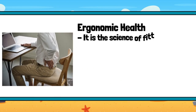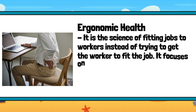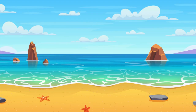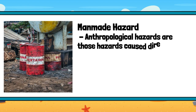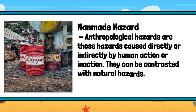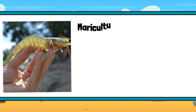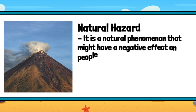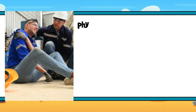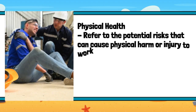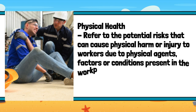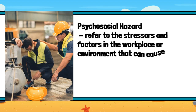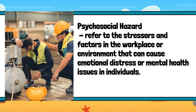Ergonomic health: it is the science of fitting jobs to workers instead of trying to get the worker to fit the job. It focuses on designing workstations, tools and work tasks for safety, efficiency, and comfort. Man-made hazard: anthropological hazards are those hazards caused directly or indirectly by human action or inaction; they can be contrasted with natural hazards. Mariculture: for the culture of fish, prawns, and lobster, floating cages are used. Natural hazard: it is a natural phenomenon that might have a negative effect on people or the environment. Physical health refers to the potential risks that can cause physical harm or injury to workers due to physical agents, factors, or conditions present in the workplace. Psychosocial hazard refers to the stressors and factors in the workplace or environment that can cause emotional distress or mental health issues in individuals.